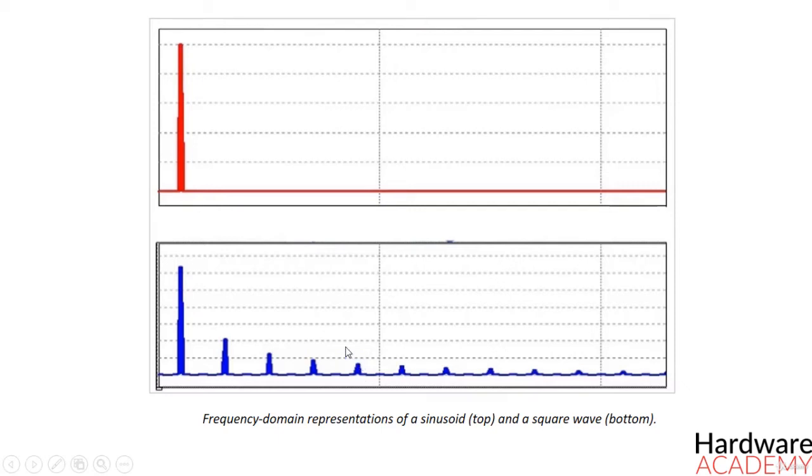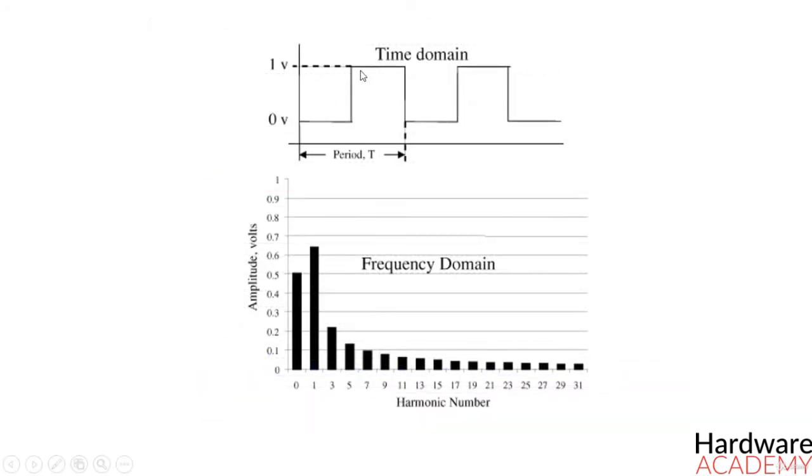An ideal square wave has a zero rise time by definition. It is not a real waveform it is an approximation to the real world. However useful insight can be gained by looking at the spectrum of an ideal square wave and using this to evaluate real waveforms later.